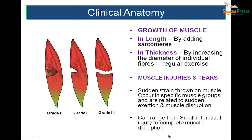Muscle injuries and tears: a grade 1 injury is just a contusion on a muscle and will heal on its own. Grade 2 is a partial thickness tear, whereas grade 3 is very severe — the entire muscle belly has disrupted. Remember that muscle bellies are not as strong as tendons, so when strain is thrown on a muscle it is more probable that the muscle belly will tear rather than the tendon.